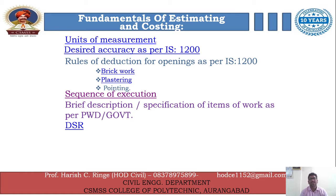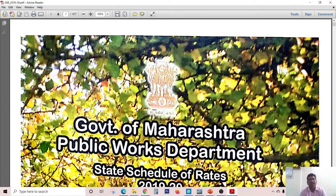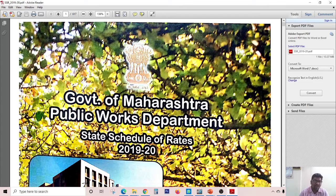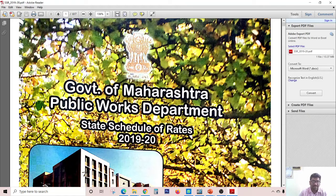We are going to use the DSR for understanding the brief description or the specification of any kind of item — how we are supposed to write down or how the proper specification should be there for any kind of work. As I already discussed, we are going to see the DSR. Rather than DSR, nowadays it is being called as SSR, that is State Schedule of Rates. Since a couple of years back, the PWD was publishing region-wise schedules of rates, but the government of Maharashtra has since decided that rates should be unique for all over the state.